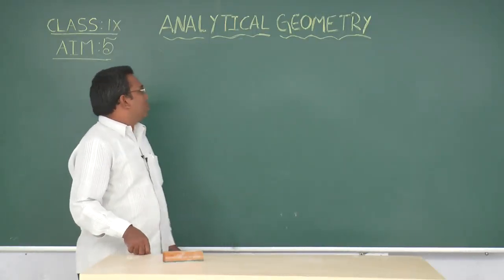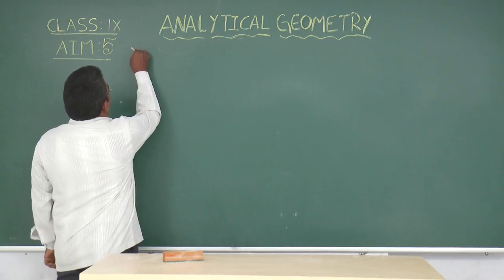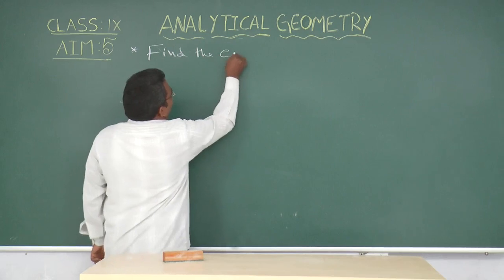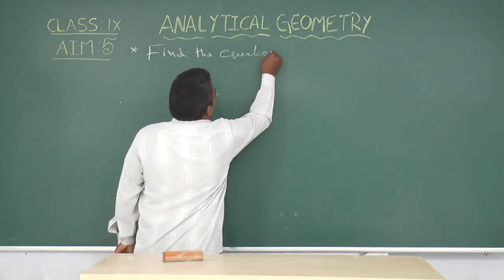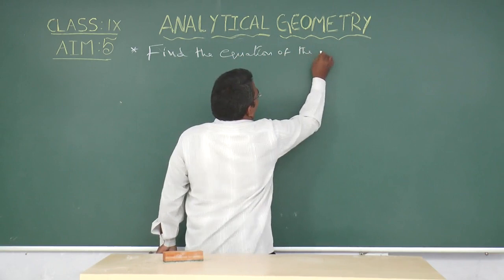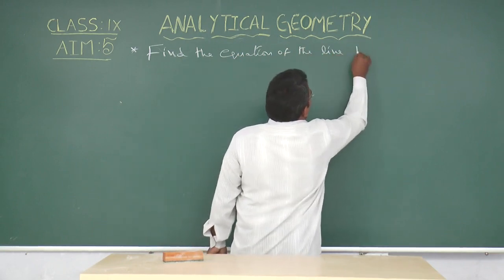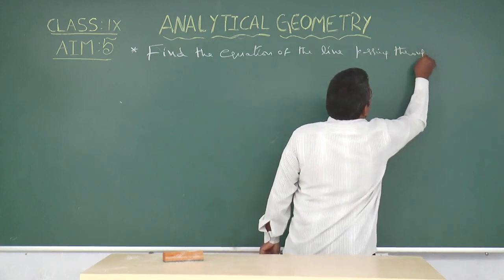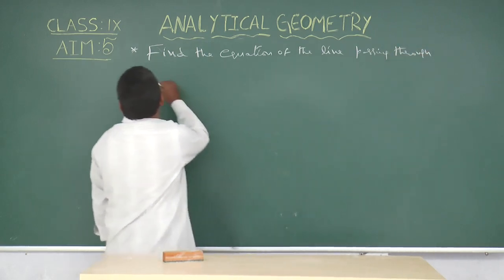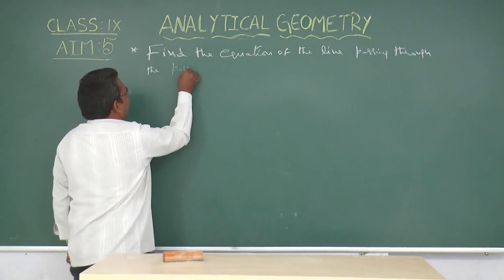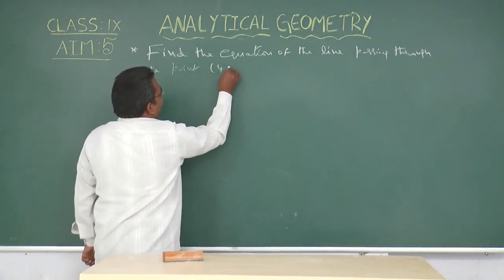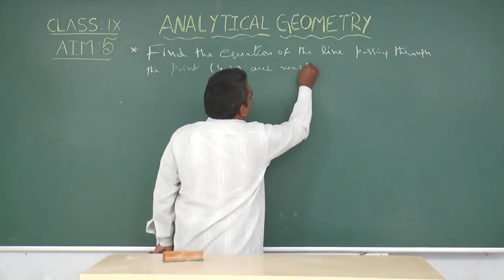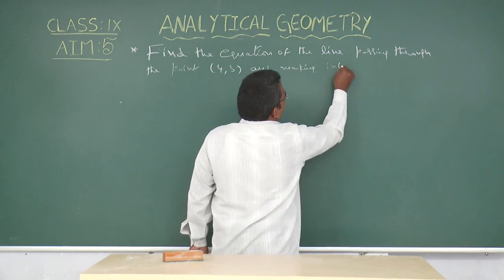Now, we discuss another problem. Find the equation of the line passing through the point (4, 3) and making intercepts on the coordinate axis.